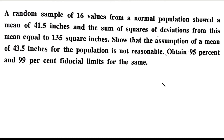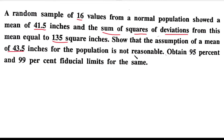Hi students. In this video, we will look at t-distribution and using small sample single mean, we will solve one problem. Let's look at the question: a random sample of 16 values from a normal population showed a mean of 41.5 inches and the sum of squares of deviation from this mean equal to 135 square inches. Show that the assumption of a mean of 43.5 inches for the population is not reasonable.